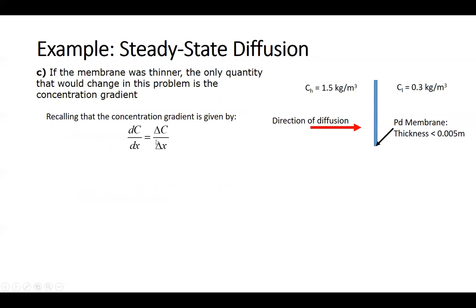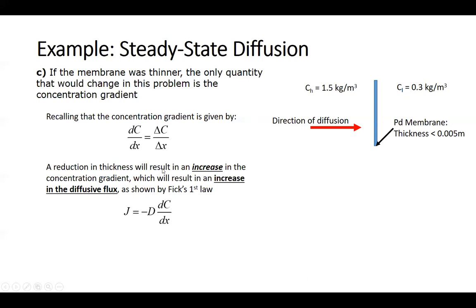The only thing that's going to change now is that this denominator delta x is going to get smaller as the membrane thickness goes down. So a reduction in thickness is going to result in an increase in the concentration gradient, which will result in an increase in the diffusive flux shown by Fick's first law. So if the membrane was thinner, we get increased diffusion.